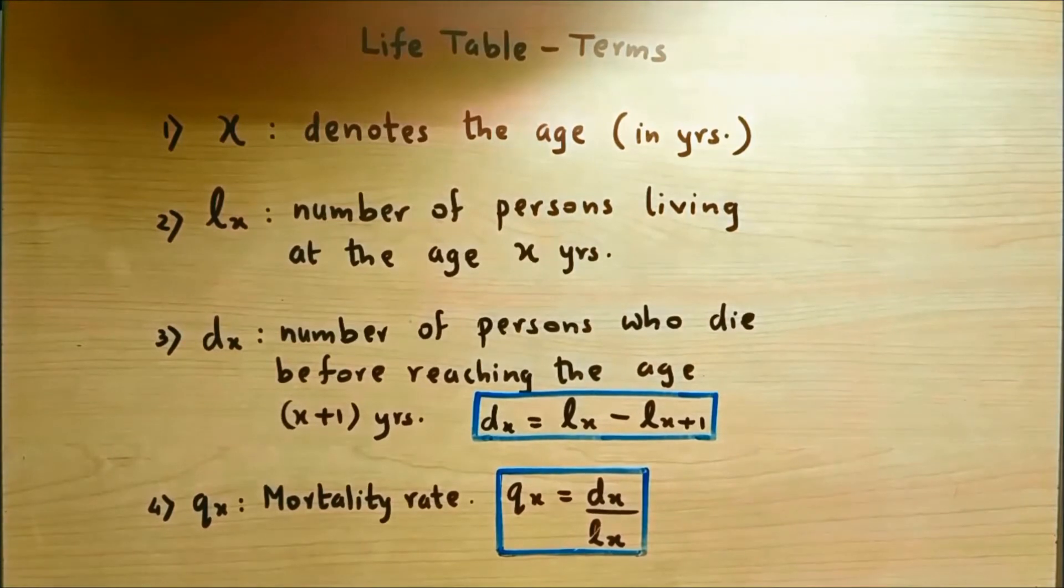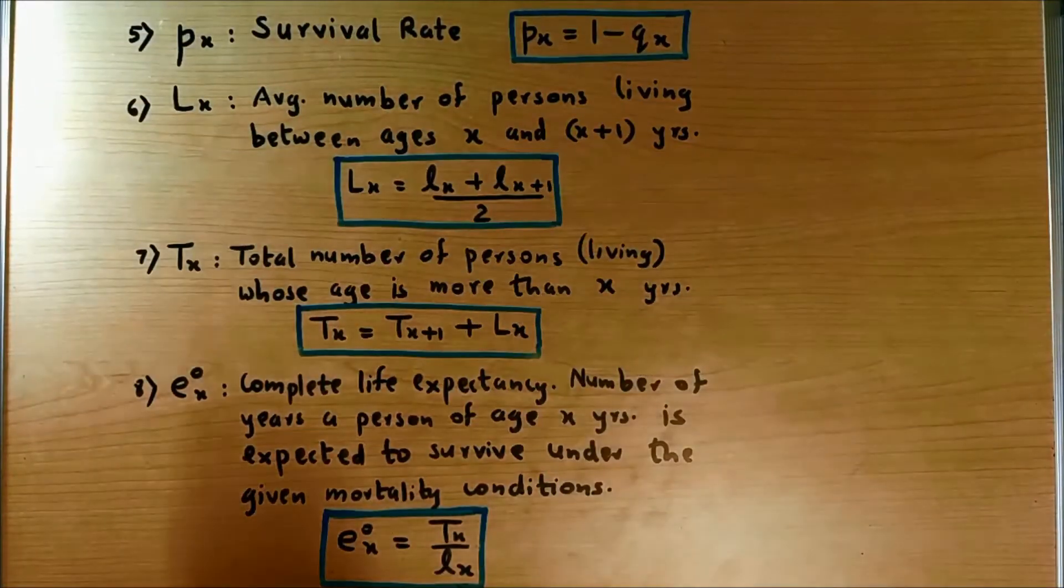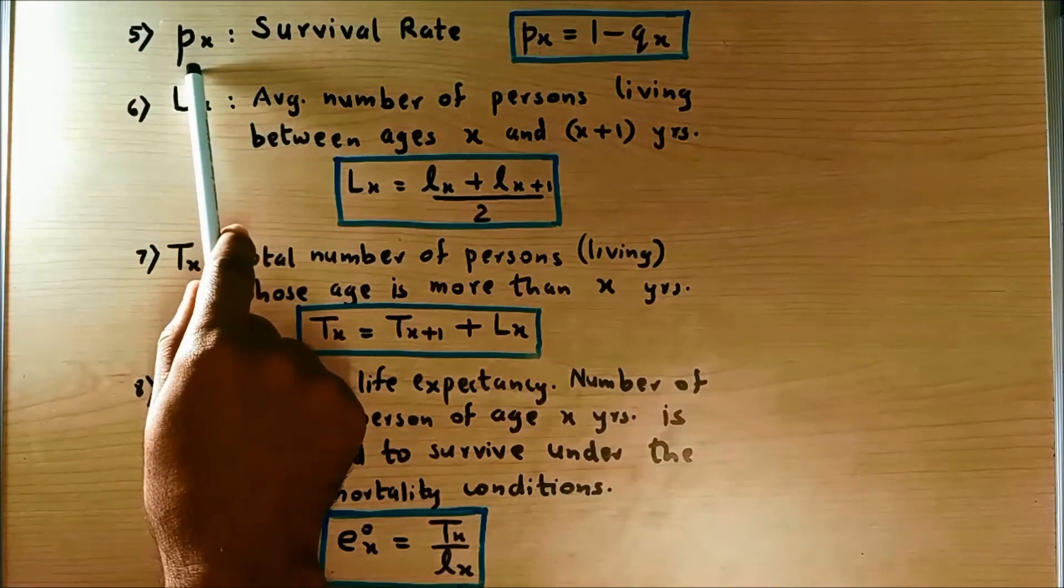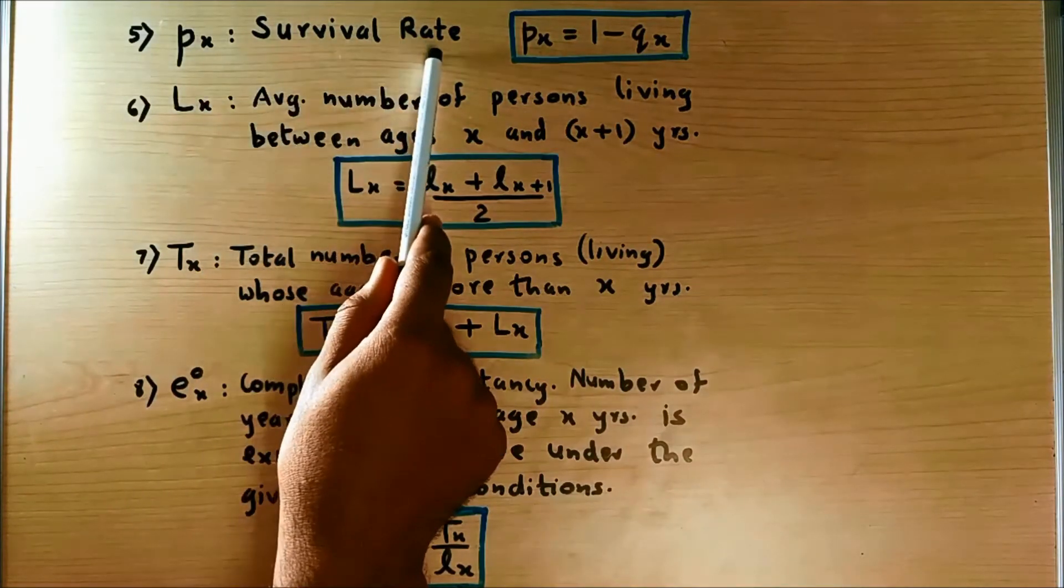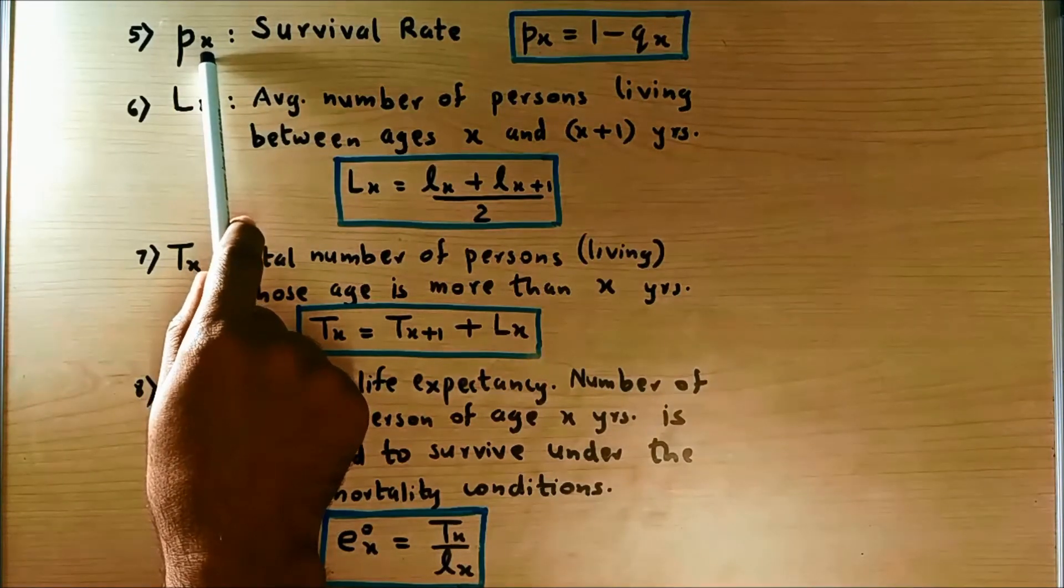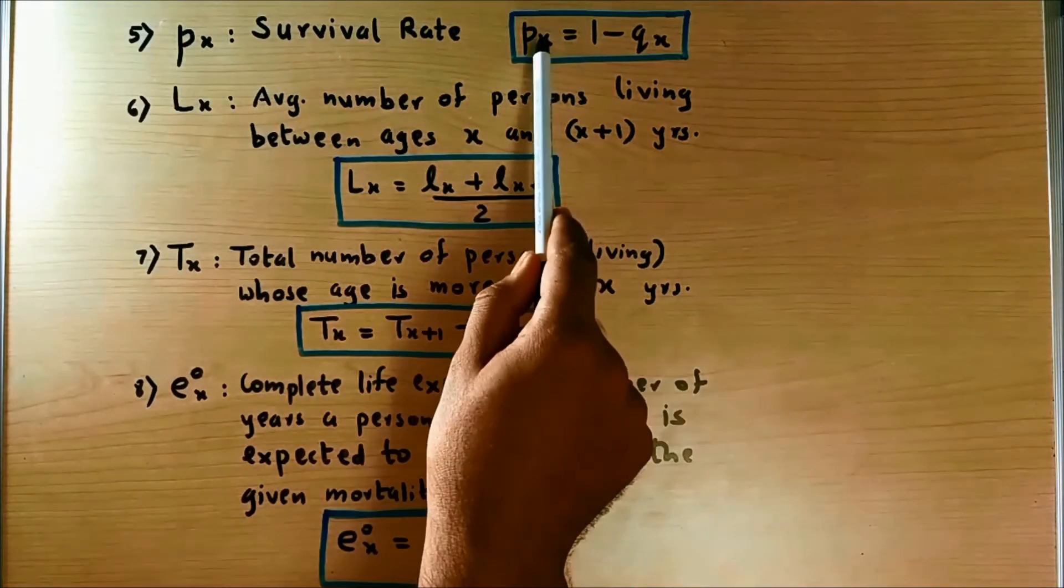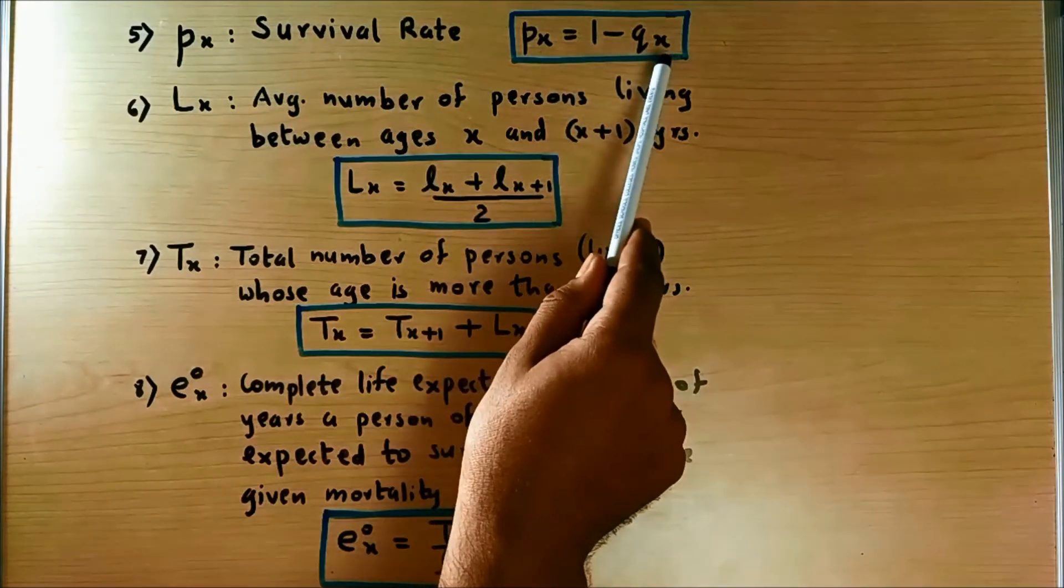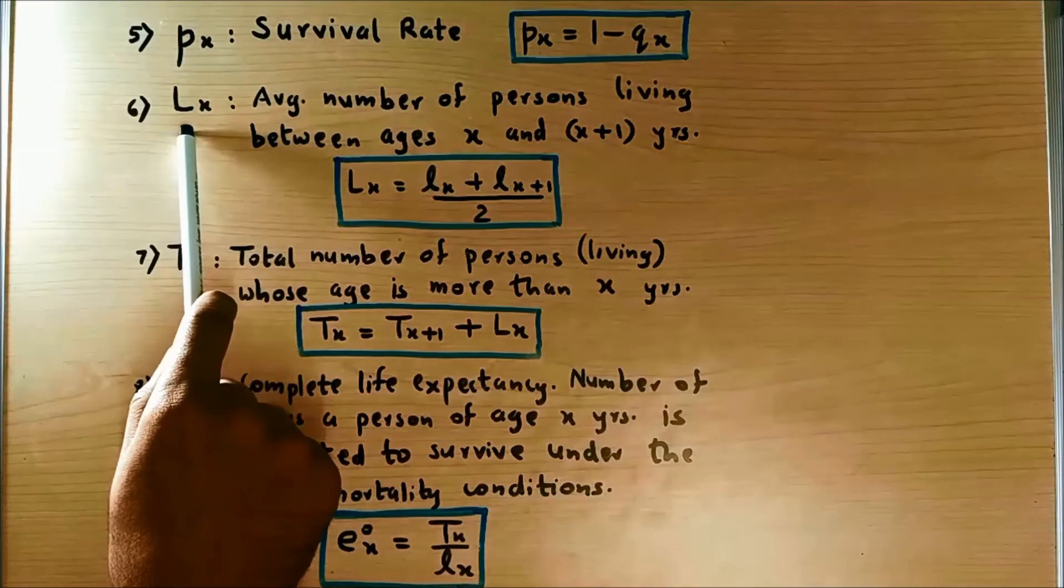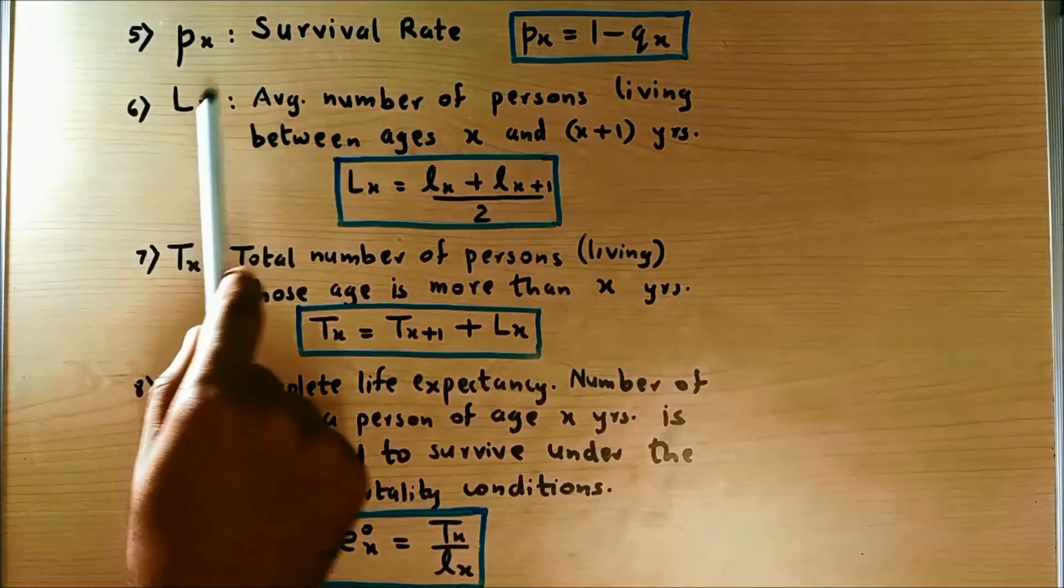We now begin with the next set of four terms. The first one is PX. Now PX is the survival rate, that is probability of a person of age X years will survive, and it is given by PX equals 1 minus QX. The next is capital LX or the uppercase LX.